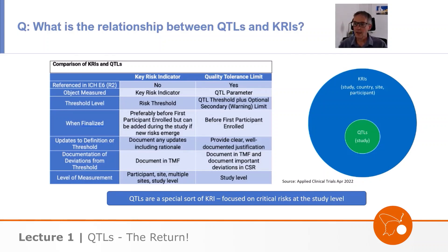Whereas key risk indicators can be study level, but they can also be at the participant or site level, perhaps across multiple sites as well. So they operate at different levels, often very specifically at the site level.